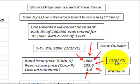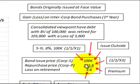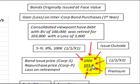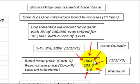Two years later on 12X3, it was repurchased by Corporation P, the parent corporation, for $103,600. So it was purchased at a premium when looking at the issue price of $100,000 versus the purchase price of $103,600. We're going to recognize a loss on the retirement because the parent paid $103,600 for a bond with a face value of $100,000, so they recognized $3,600 as a loss.